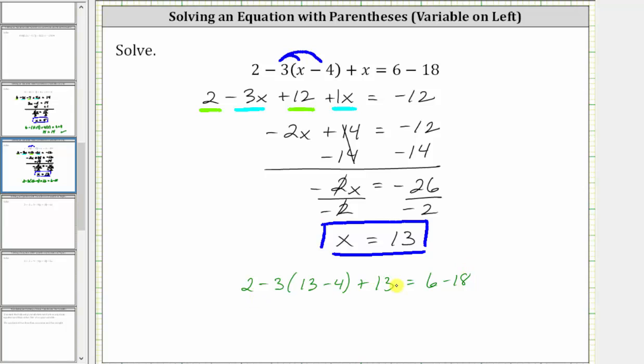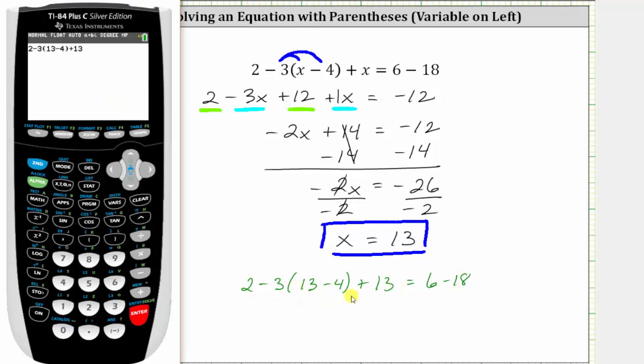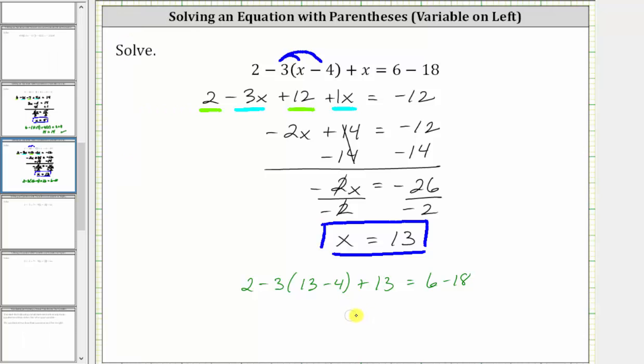And now let's evaluate the left side on the calculator. Notice the left side simplifies to negative 12. On the right side, we have six minus 18, which is also negative 12. Negative 12 equals negative 12 is true, verifying the solution is correct.